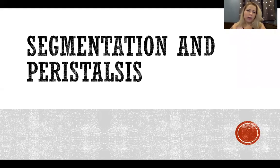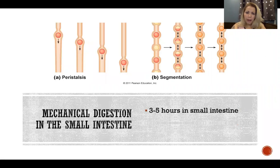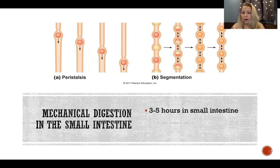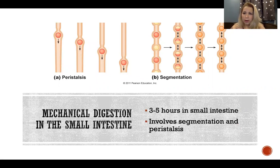Hello. In this video, I'm going to talk about segmentation and peristalsis. Mechanical digestion in the small intestine happens over about three to five hours — that's how long it takes for contents to travel from where it enters the small intestine after leaving the stomach until it leaves the small intestine and enters the large intestine. Mechanical digestion throughout the small intestine includes both segmentation and peristalsis.